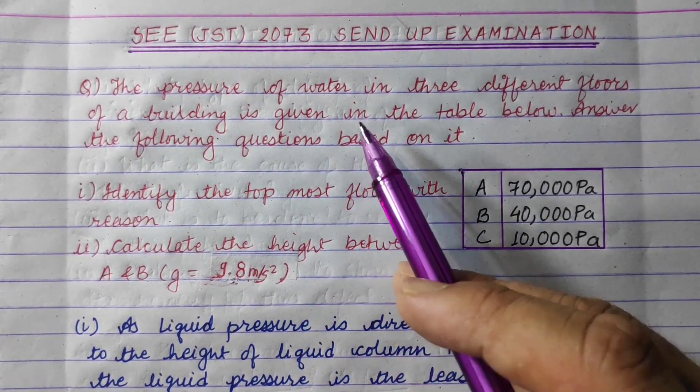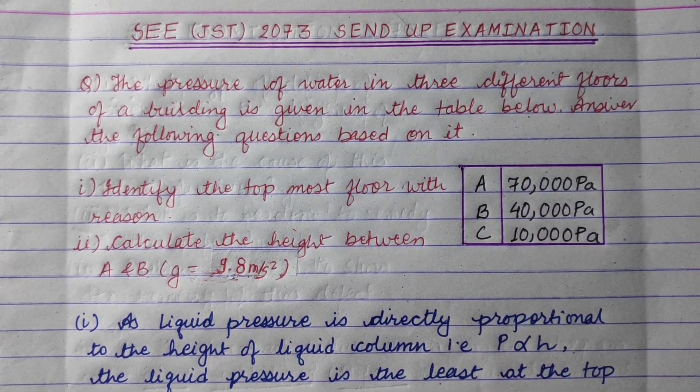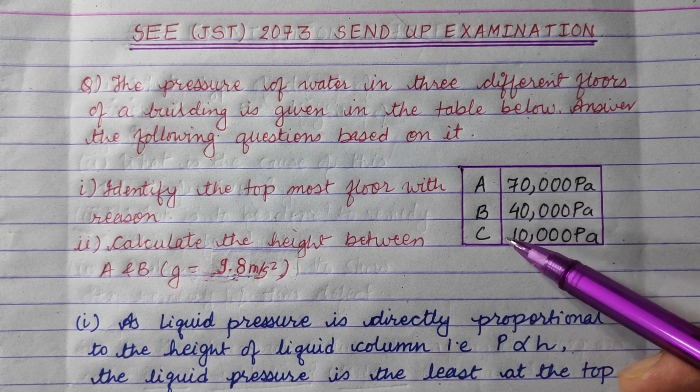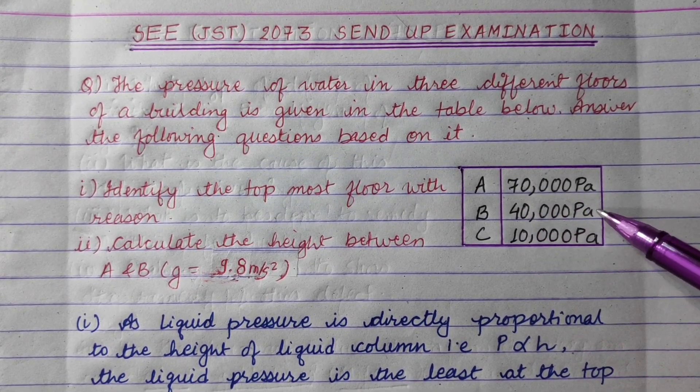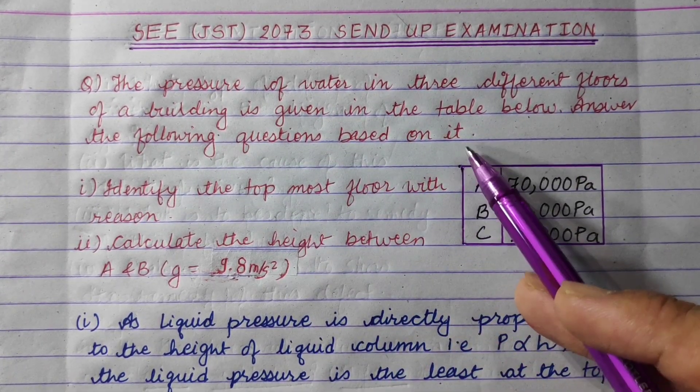The pressure of water in three different floors of a building is given in the table. There are three floors: A is 70,000 Pascal, B is 40,000 Pascal, and C is 10,000 Pascal. Answer the following questions based on it.